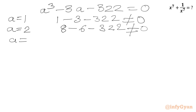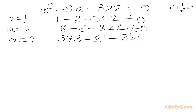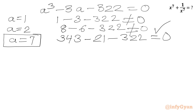Let's plug in a = 7. Then 7³ = 343, minus 3 × 7 = 21, minus 322. Since 322 + 21 = 343, we get 343 − 343 = 0. So a = 7 is our base solution.